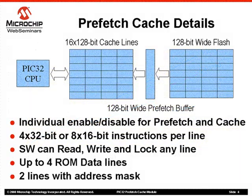The exact performance improvement depends on the code organization of the application. The Prefetch Cache Module consists of a prefetch buffer, cache memory, and associated control logic. The software may individually enable or disable the prefetch buffer or cache memory. This level of control allows the application to achieve different levels of determinism. The Prefetch Buffer is a 128-bit buffer with integrated logic to automatically fetch the next 128 bits of data based on the current instruction the CPU is executing.